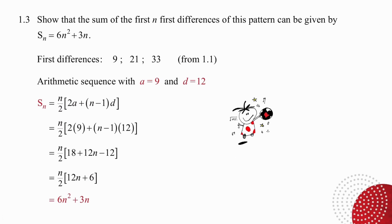In question 1.3, we are asked to show that the sum of the first n first differences of this pattern can be given by the formula Sₙ equals 6n² plus 3n. It's very important to remember that the row of first differences is a simple linear pattern or if you prefer an arithmetic sequence.